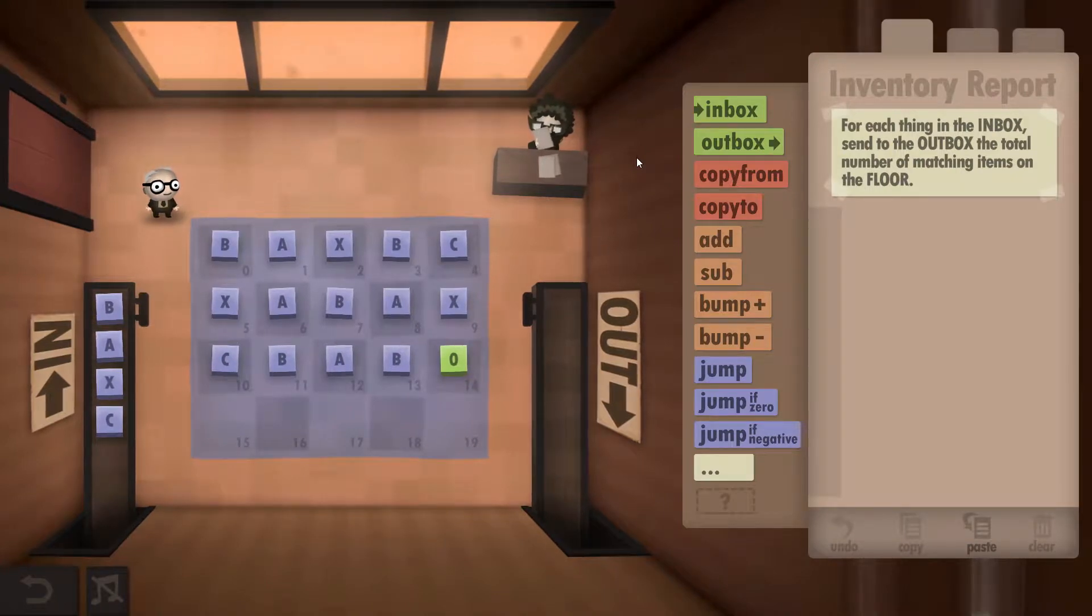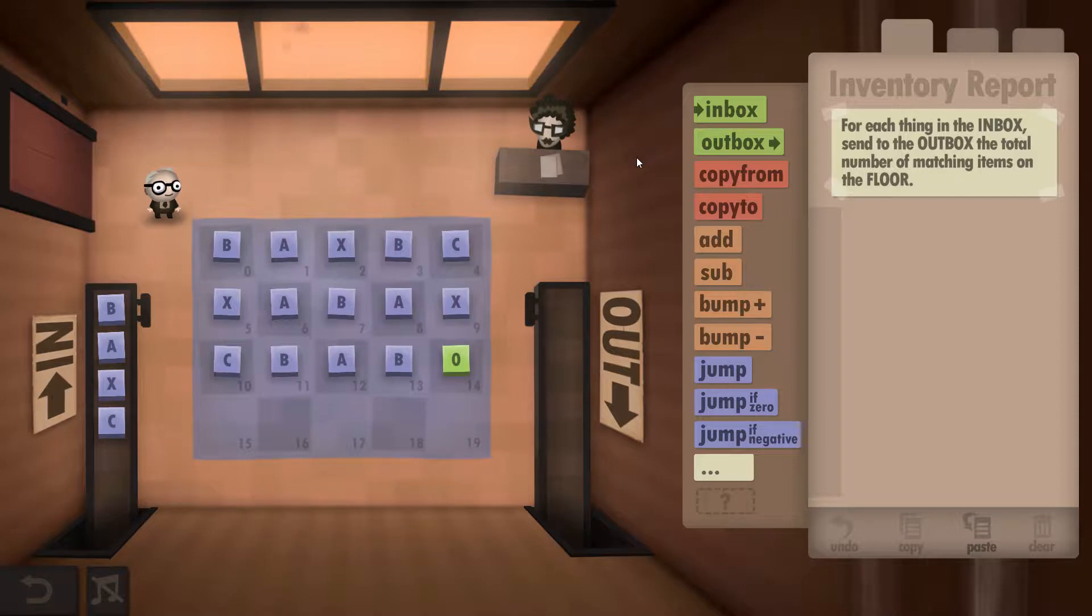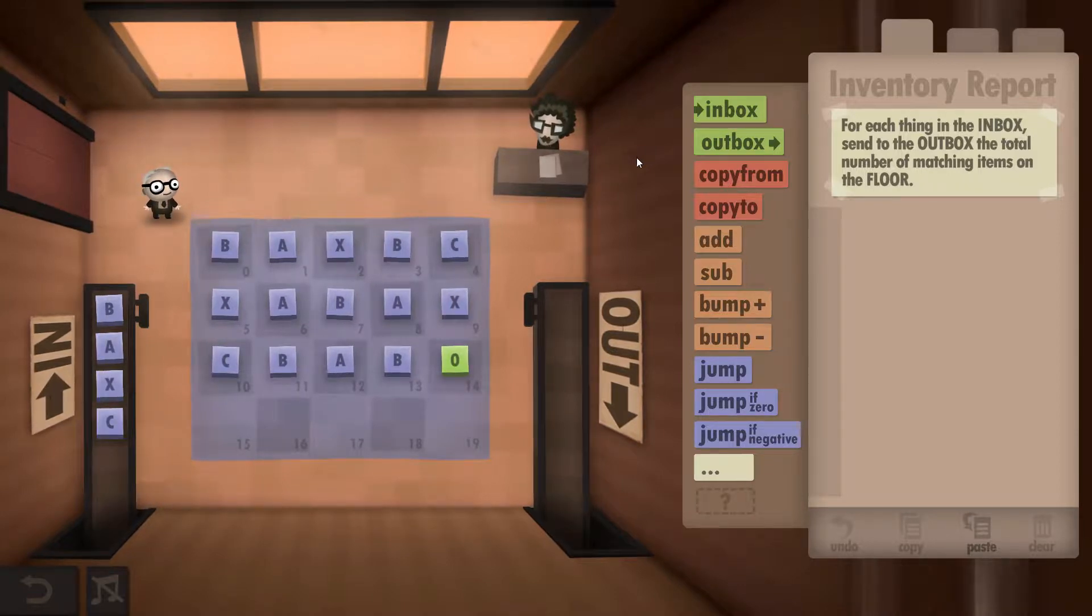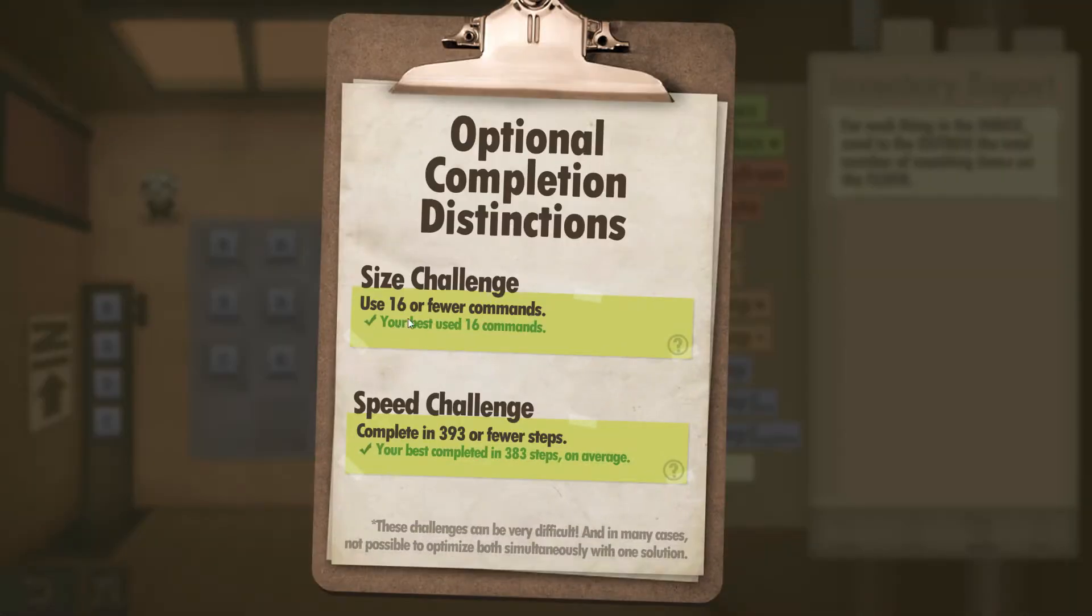Hey guys, Super Good Dave here. I'm playing Human Resource Machine, this is Year 32, and I'll be showing you how to get both the size and speed challenges completed in this one. The challenges are 16 or fewer commands and complete in 393 or fewer steps.